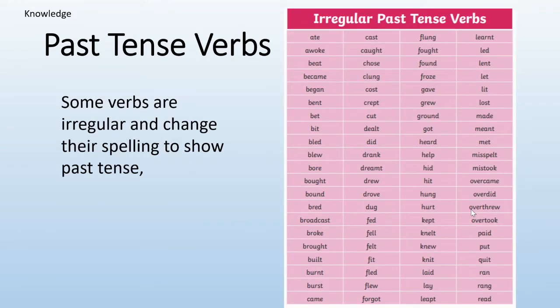Some verbs are irregular and change their spelling to show past tense. Here I have a list of them on the screen for you. For example, the first one: every day I eat, yesterday I ate. So the spelling completely changes. These are ones that we need to practice and get used to — how they look and how they spell.